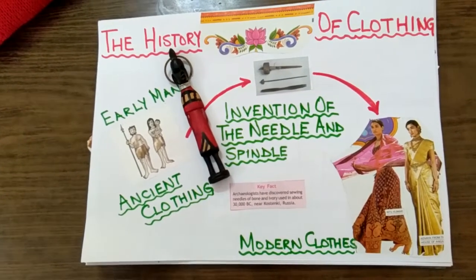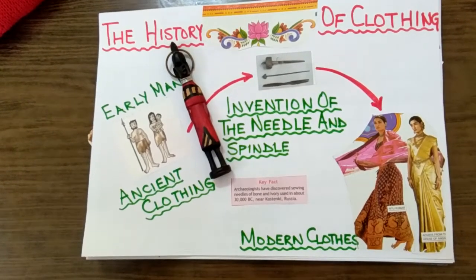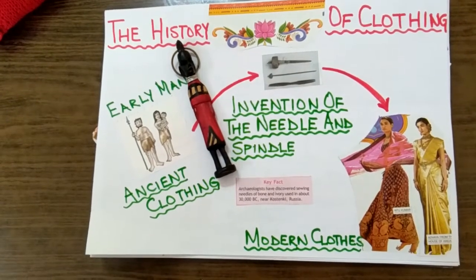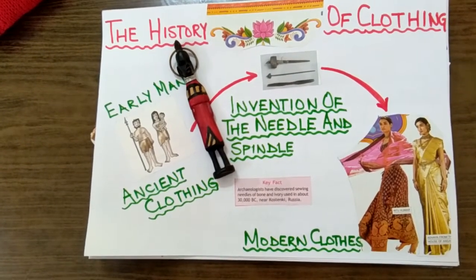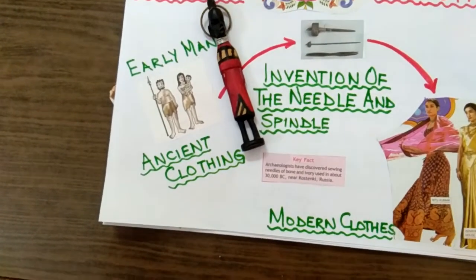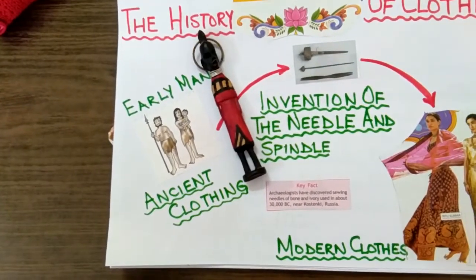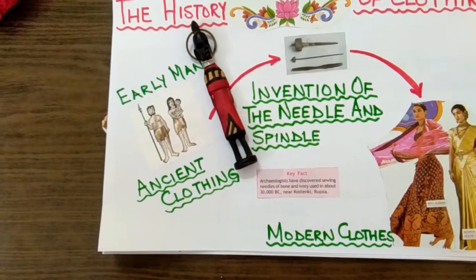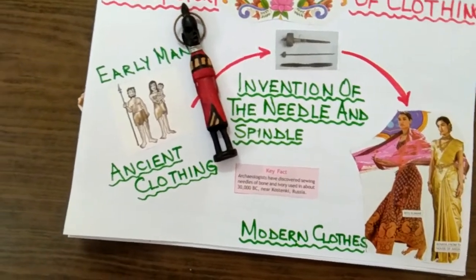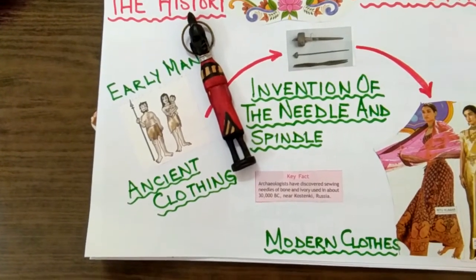Early man used to live in the forest like animals. He used to hunt for animals with stones or a spear, or bhala made of a pointed stone, to kill animals and eat their raw flesh. Early man slowly learned to wear clothes. In ancient times, people used to cover their bodies with bark and big leaves of trees, or animal skins and furs.